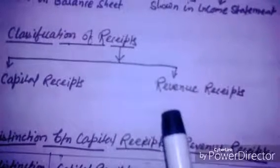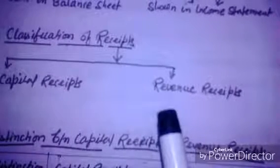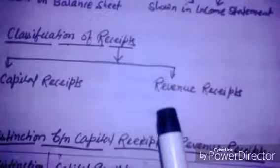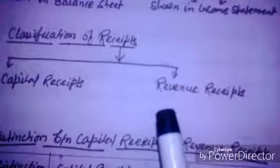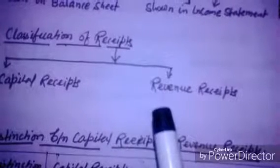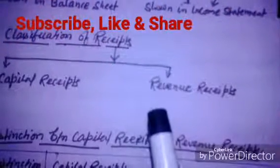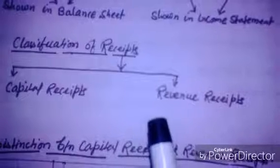Further examples of revenue receipts include: fifth, sales of goods; sixth, receipts from the government in respect of stocks in trade destroyed in civil disturbances; seventh, subsidy or cash assistance received by a company in respect of an export promotion scheme of the government; eighth, receipt from sales of import entitlement; ninth, profit on sales of shares if authorized by the memorandum of association; and tenth, income from investing assets like mines.